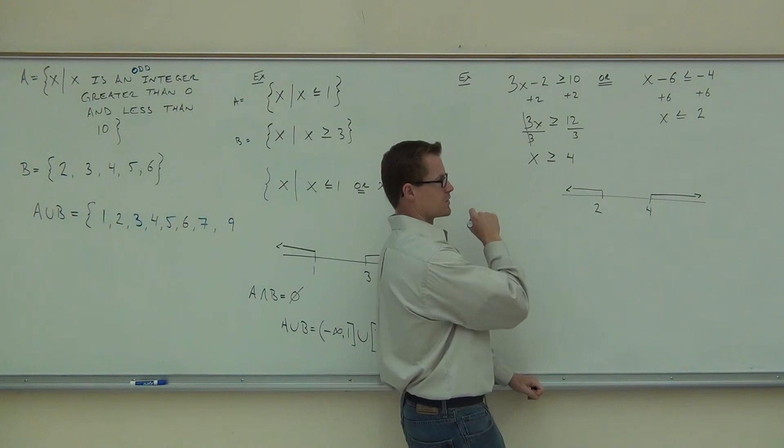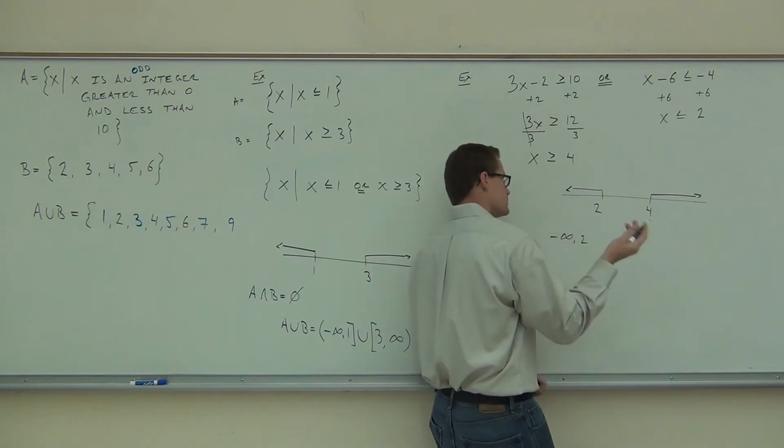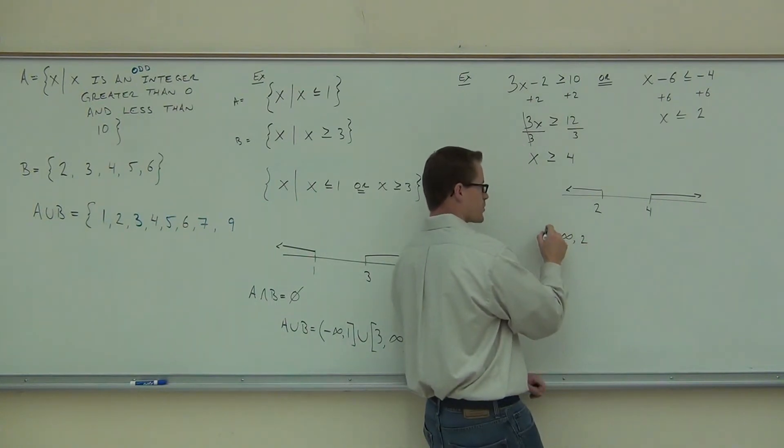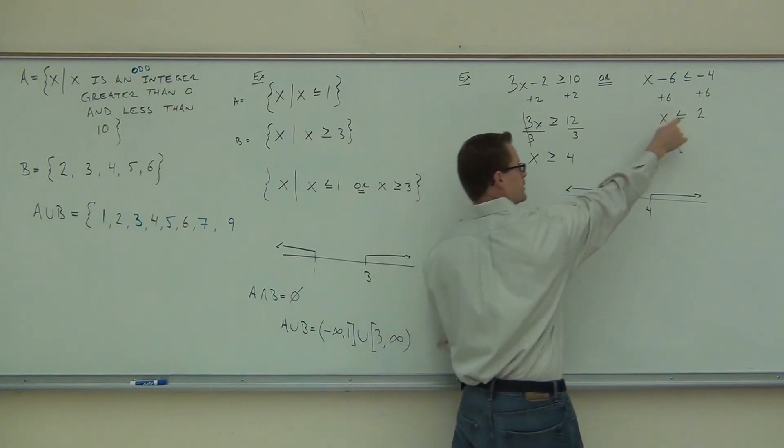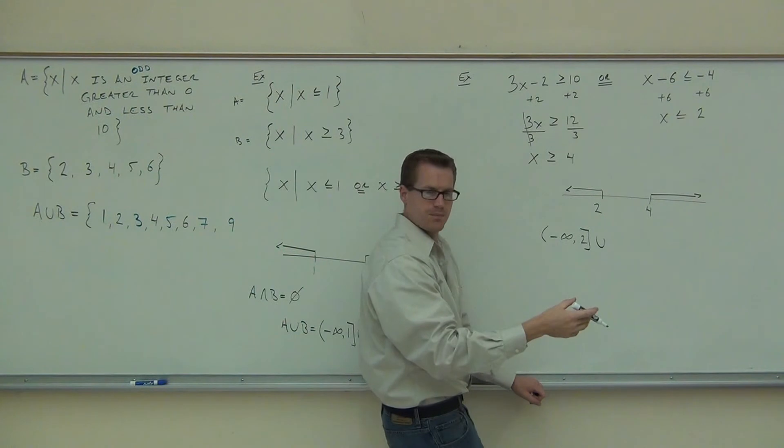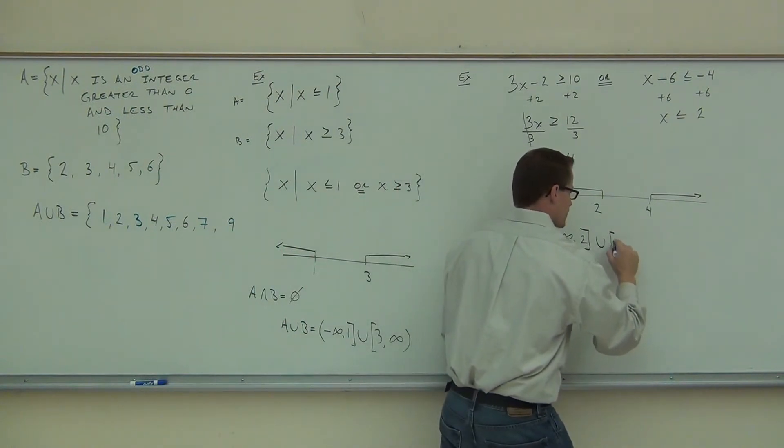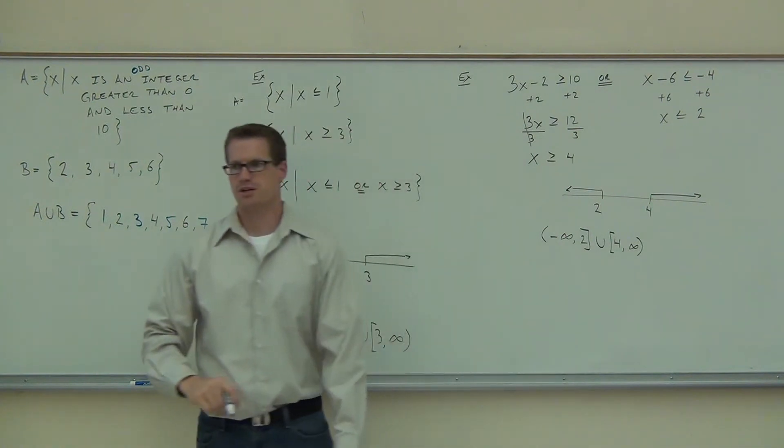Name me my intervals here. Where does the first one start? Negative infinity to 2. And we're going to use a parenthesis for our infinity and a bracket for our two because we have that equals 2. We'll put a union in the middle saying there's another interval. We've got a bracket for the four. We've got a parenthesis for the infinity. And that's our interval notation for or.